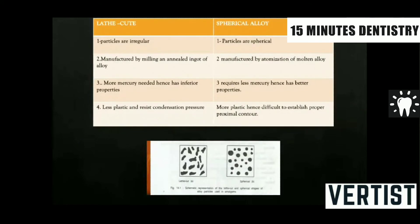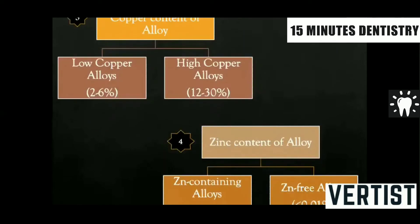There are some differences when particle shape is concerned. Lathe-cut particles are irregular, have inferior properties, and resist condensation pressure. Whereas spherical alloy particles are manufactured by atomization of the molten alloy and use less mercury. However, their disadvantage is that it is very difficult to establish proper proximal contour unless supported by a good matrix and wedge.